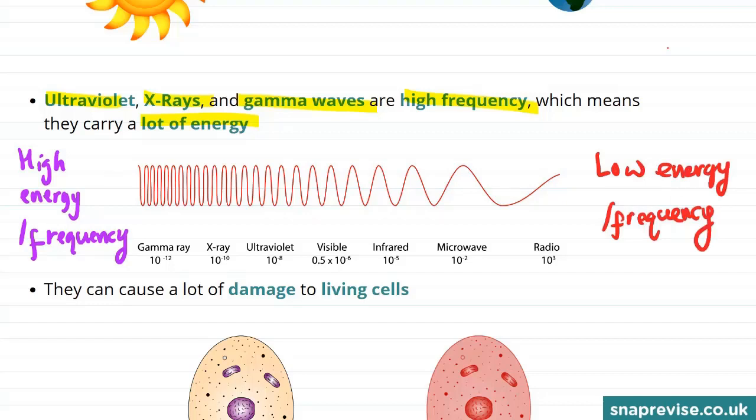And so again we point out that the highest energy, so the most dangerous waves, are these high frequency ones. These gamma waves, these x-rays and these ultraviolet waves.